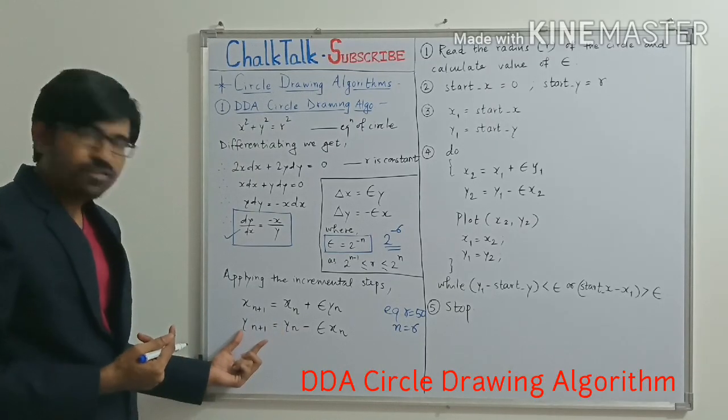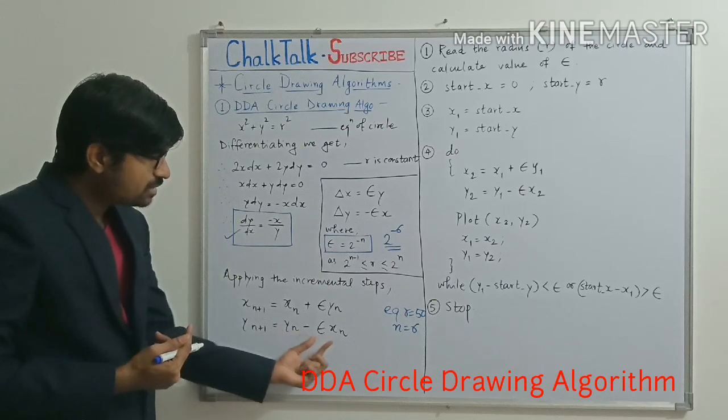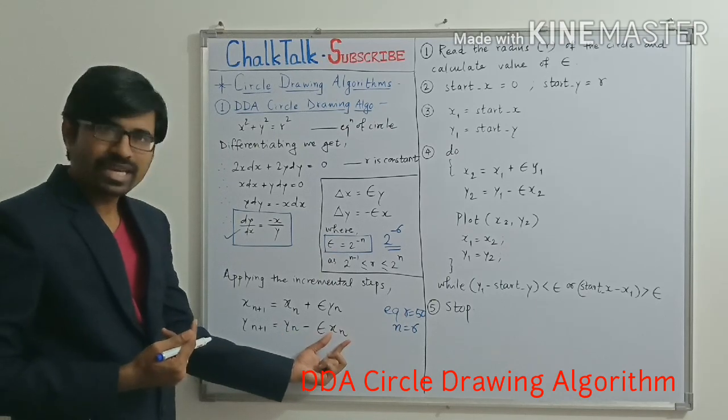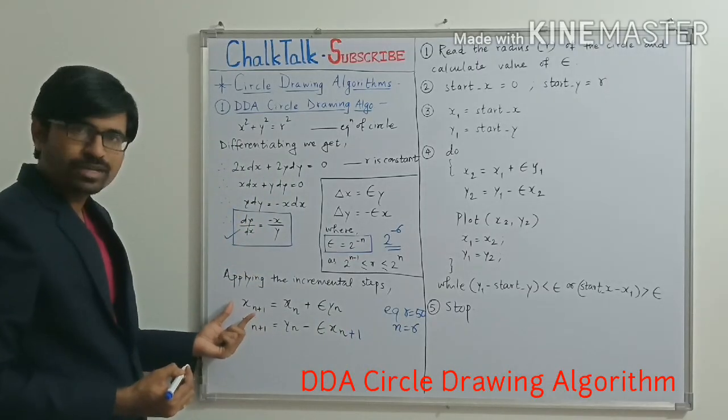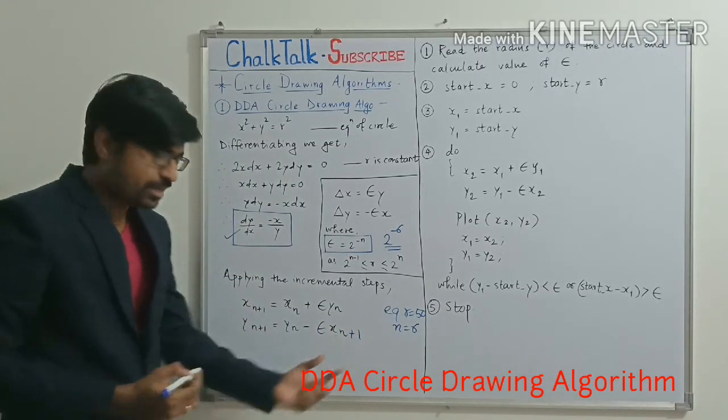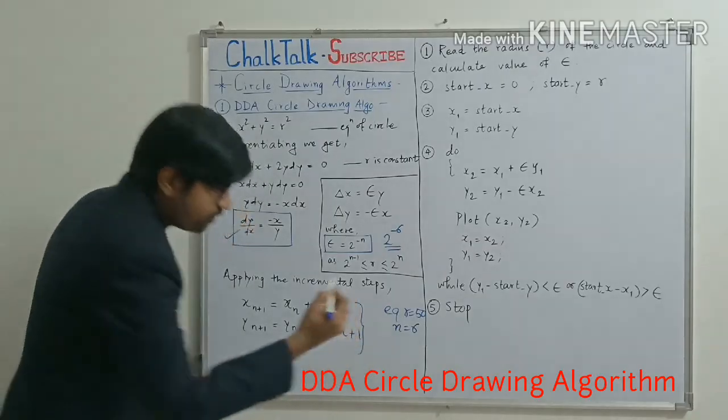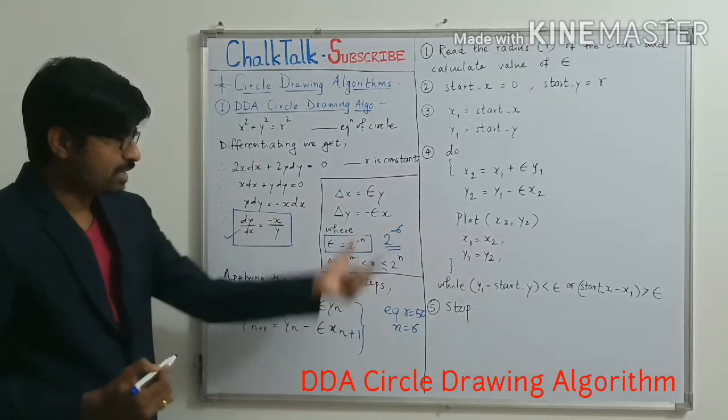So instead of going to the spiral type of diagram, we are expecting output as a circle. So we have to make a little modification into it. In the second equation of y(n+1), y(n) - epsilon x(n), instead of taking x(n), you modify it to x(n+1). So this updated value of x(n+1) should be substituted here. And now these are my final equations that I will be utilizing in the algorithm.